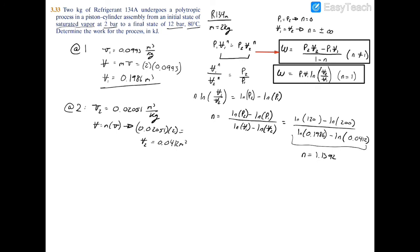Let's plug in our numbers. Work equals 1200 kilopascals times 0.0412 cubic meters minus 200 kilopascals times 0.1986, all divided by 1 minus N, which is 1 minus 1.1392. Plug that in and you'll have the work for process 1 to 2 equals negative 69.83 kilojoules.